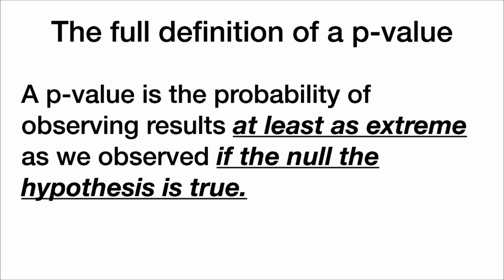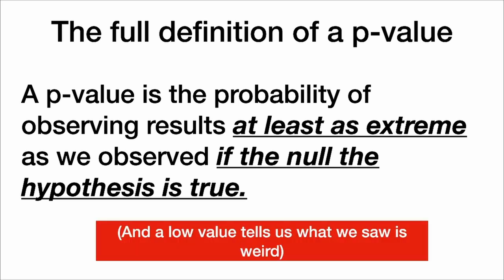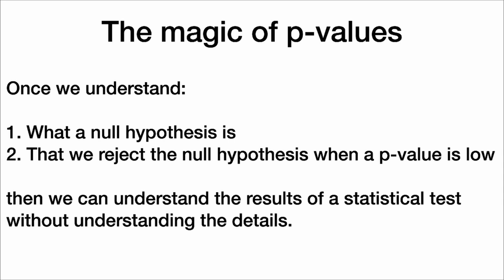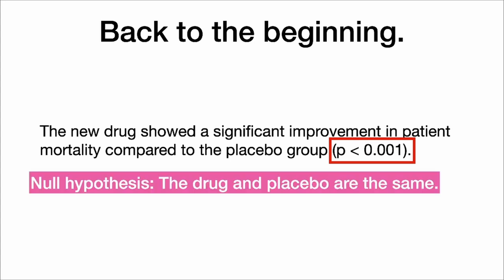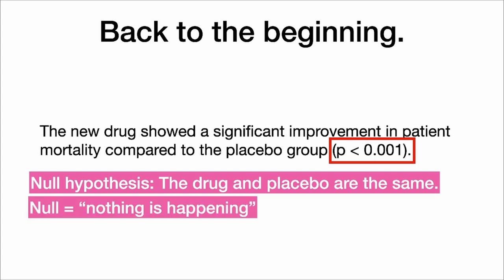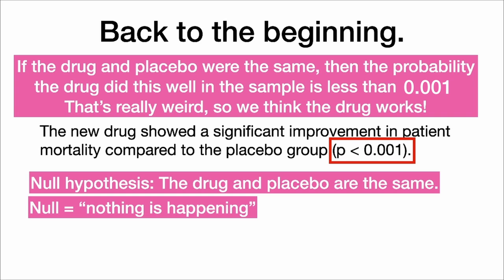So here is the full definition of a p-value: it is the probability of observing results at least as extreme as we observed, if the null hypothesis is true. A low p-value tells us that what we saw is weird. Back to our drug example: the null hypothesis was that the drug and placebo are the same. If they were the same, the probability that the drug performed this well in our sample is less than 0.001 — that's really weird. So we think the drug works.